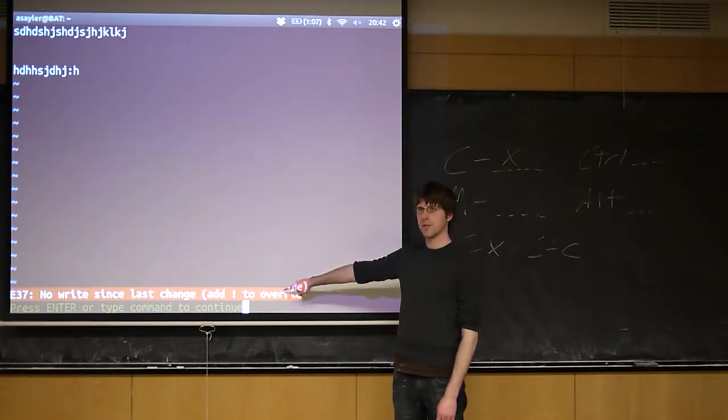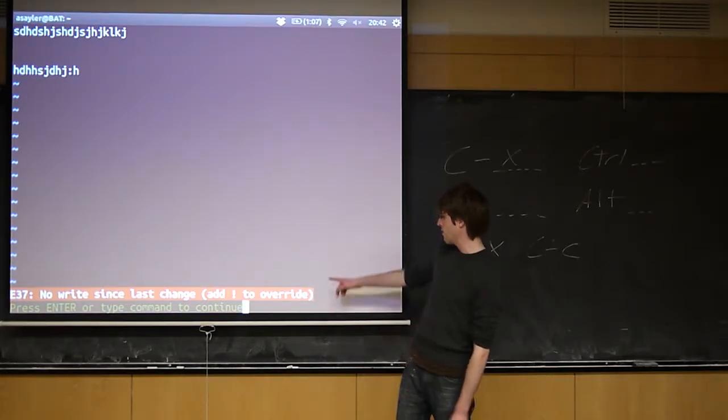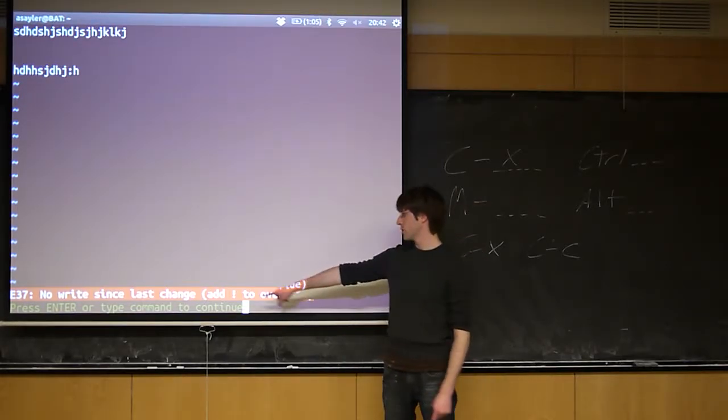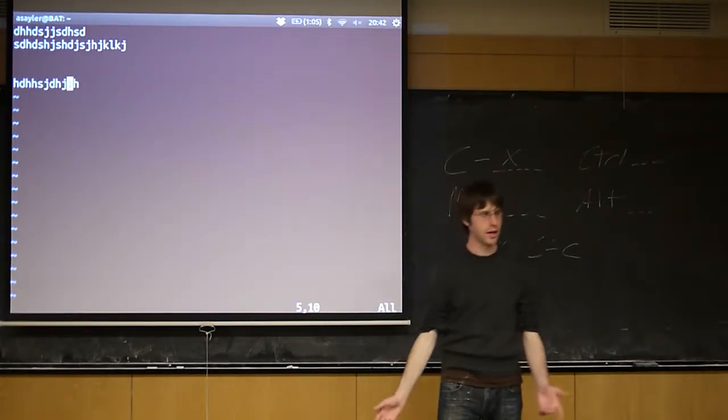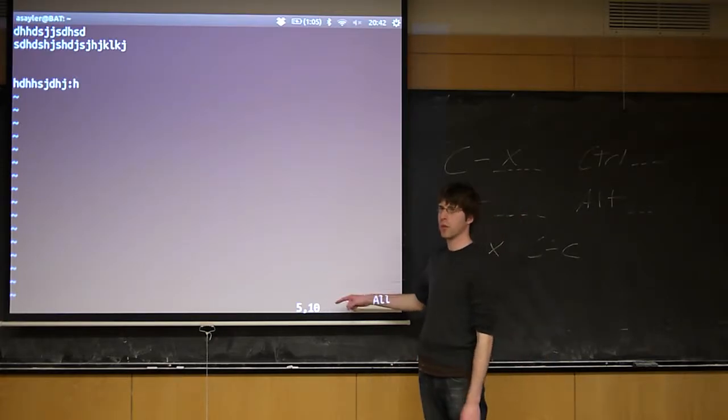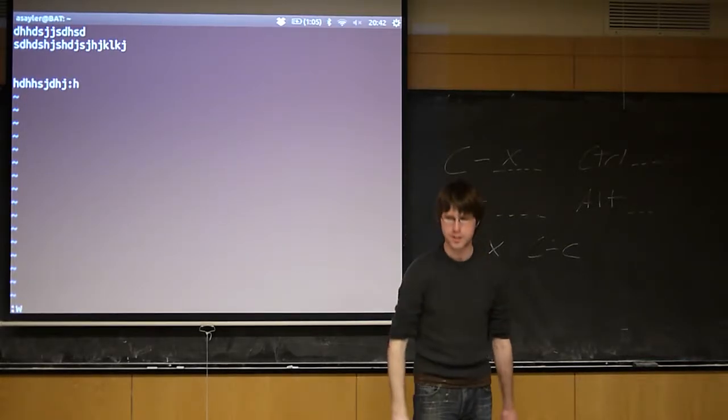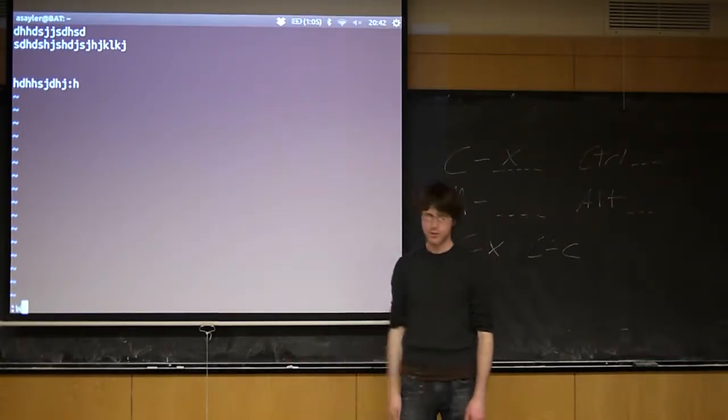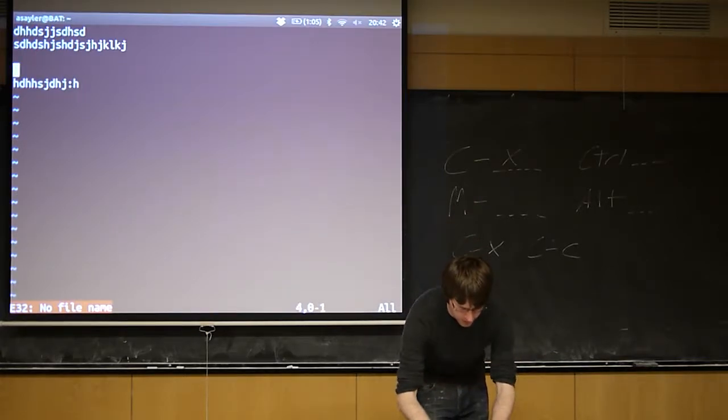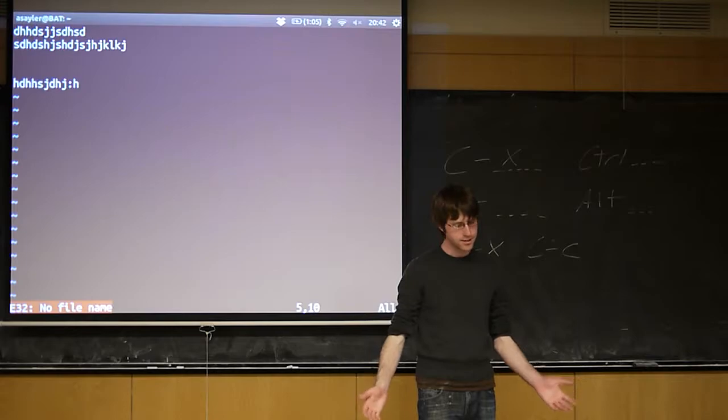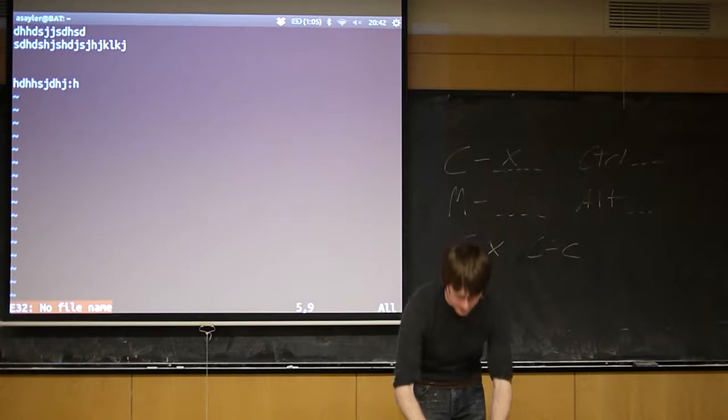And it's stopping me from exiting for the same reason Emacs was. I have a file I've edited and I haven't saved it. If I want to, so press enter to type the command and continue. So if I just hit enter, it's not going to exit. If I had done an exclamation point, it would have forced it to exit. If I want to save this file first, the command is W, so W for write. So if I do a W, it's going to say no file name.